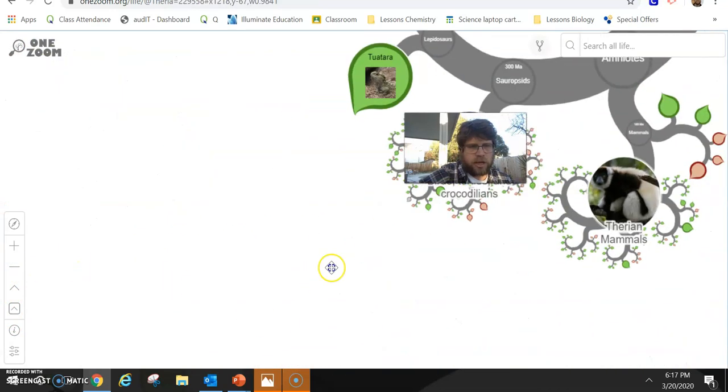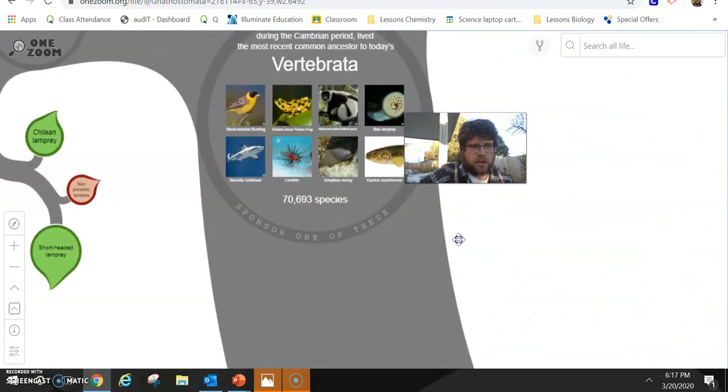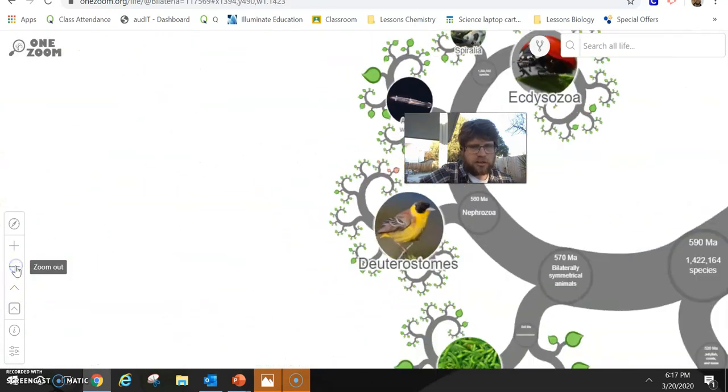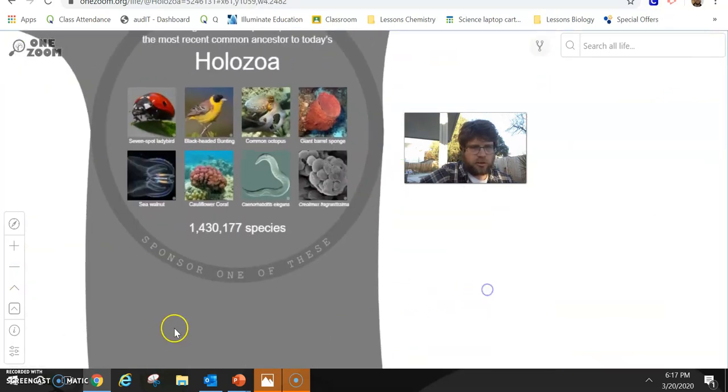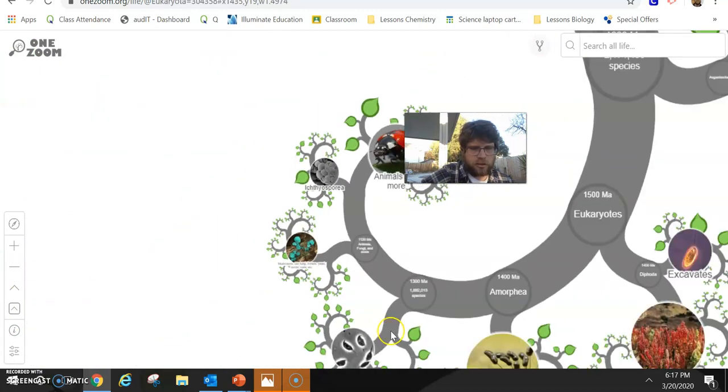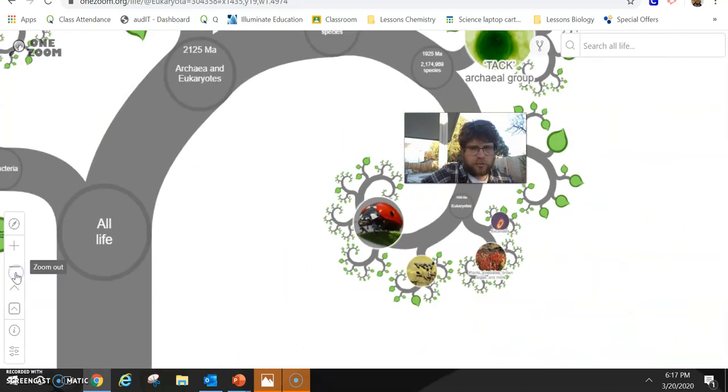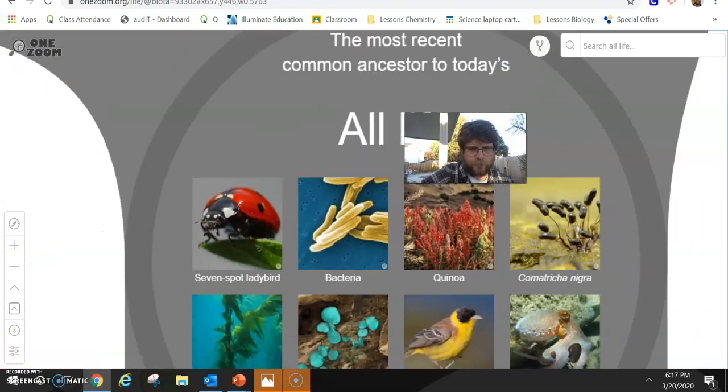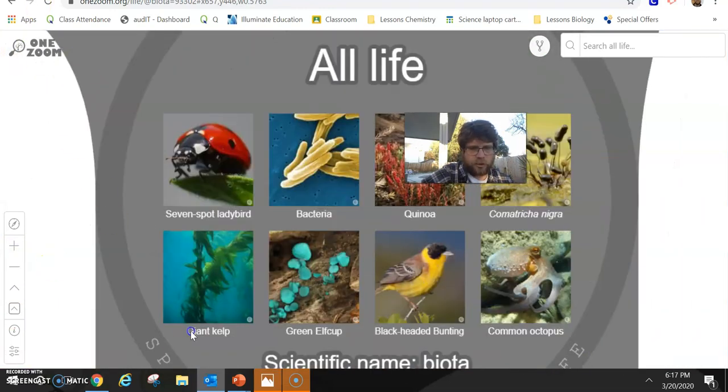And as I zoom back out of this tree. Oh, there's vertebrates. Each section tells you how many species there are. Holozoa. We're not even at the base yet. Okay. Gotta keep zooming out. All life. Alright. All life. All organisms.